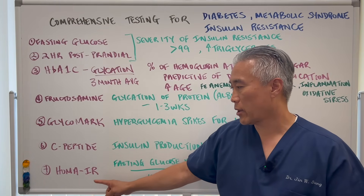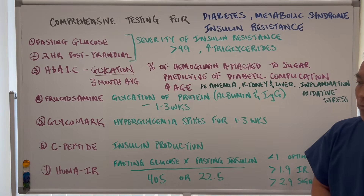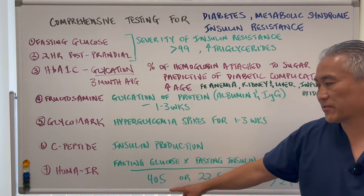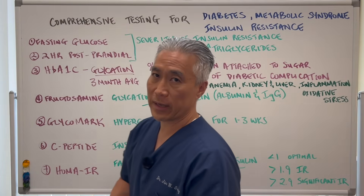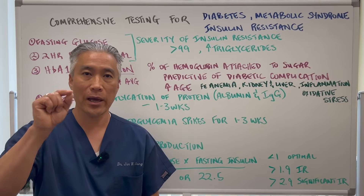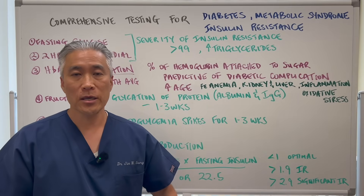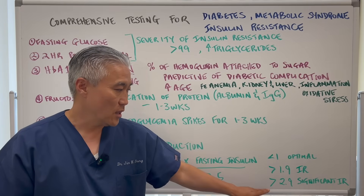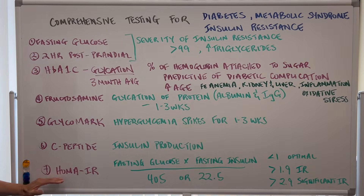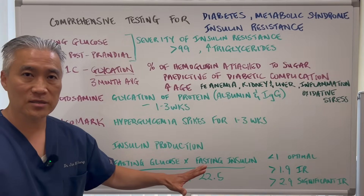The last marker is the HOMA-IR calculator — Homeostatic Model Assessment of Insulin Resistance. This is fasting glucose multiplied by fasting insulin, divided by a standardizing factor. If the result is less than 1, it is optimal. If it is above 1.9, you are developing insulin resistance. If it is above 2.7, you have significant insulin resistance. HOMA-IR is very important for detecting insulin resistance early.